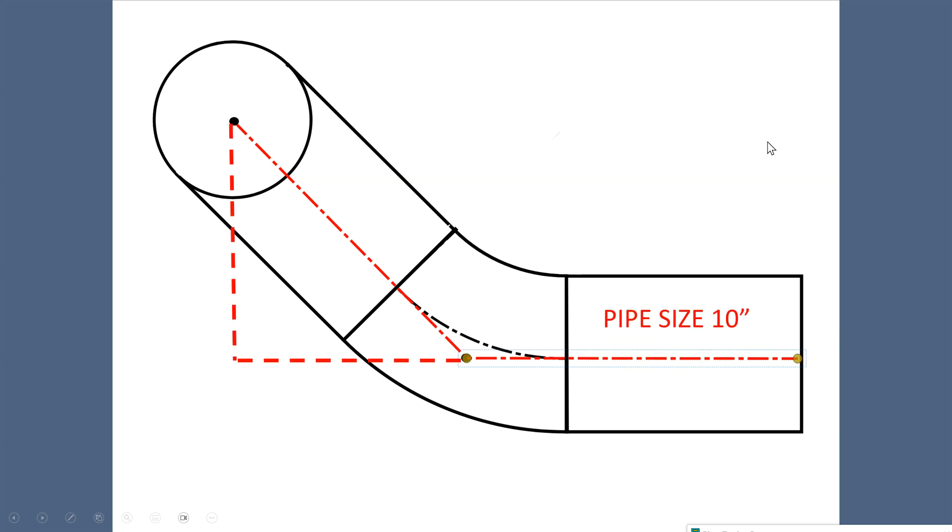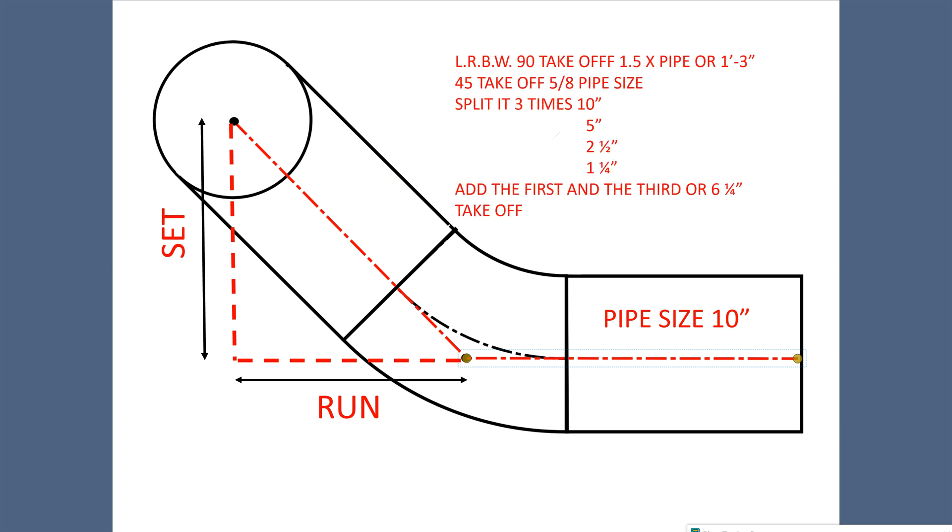Pipe size will be 10 inch. We drew in our triangle, 45 triangle. Both sides are equal. The set and the run in a 45 triangle. The long radius butt weld 90, the takeoff equals one and a half times the pipe size, or one foot three. And the 45 takeoff is five eighths the pipe size. Easiest way to do that is to split it three times. Ten inches the pipe size.